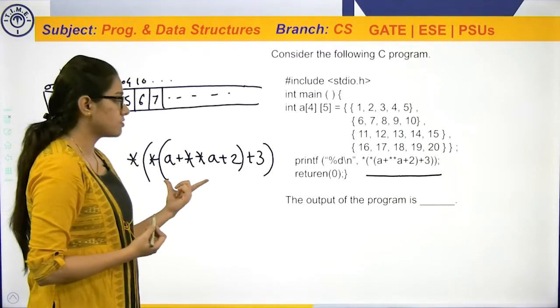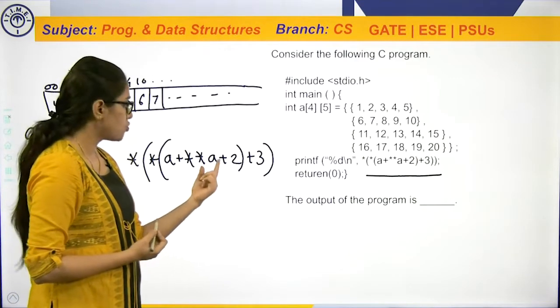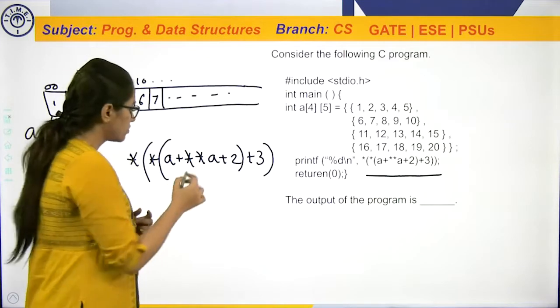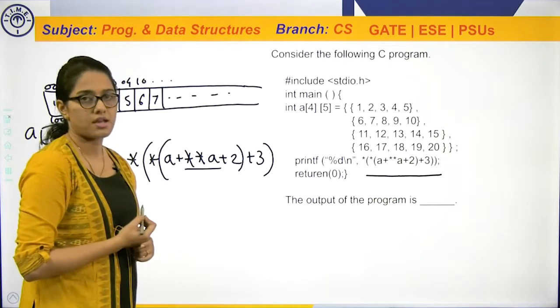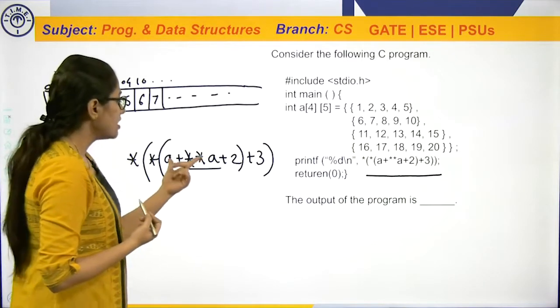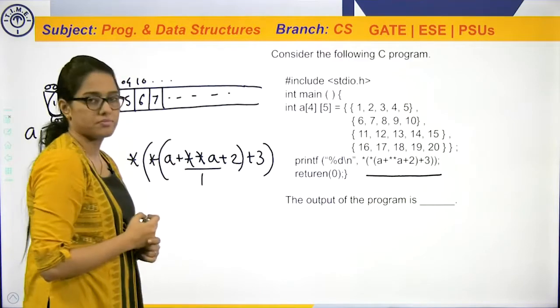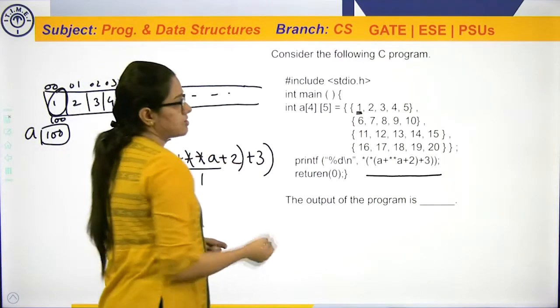Inside inner brackets, you can see there are three operators. Two binary operator plus and one unary operator star. So, who will get executed first? This star star A. So, star star A is nothing but the first element of your array. That is 1. The first element of your array is 1.